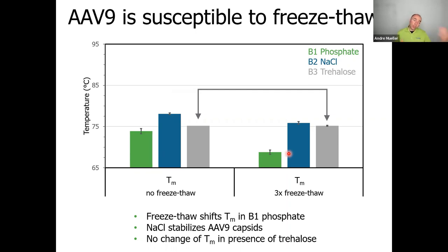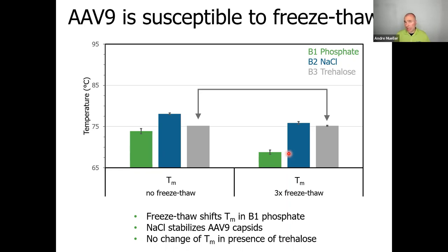Summarizing the capsid protein melting behavior: AAV5 is not very dependent on the buffer — it doesn't show much difference across different buffers. AAV9 shows a bigger difference across buffers and also shows larger changes in melting temperature after freeze-thaw cycles compared with AAV5.